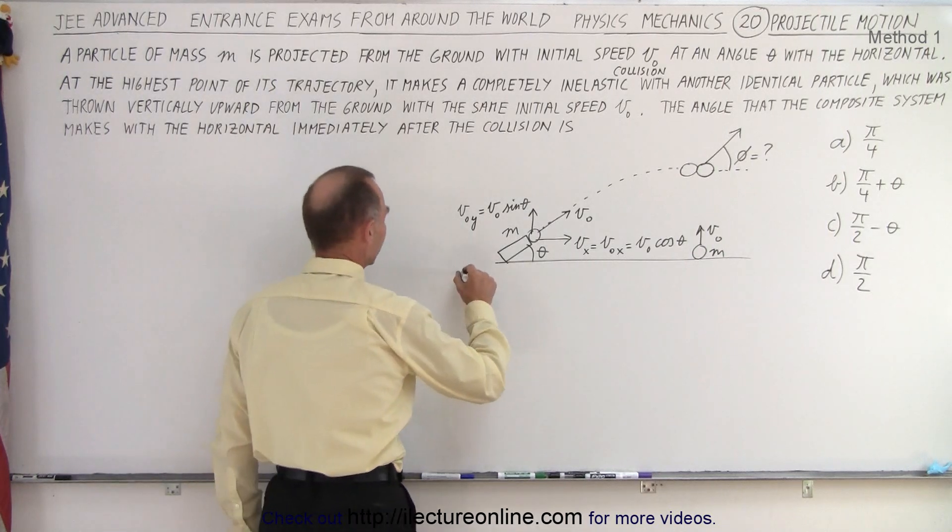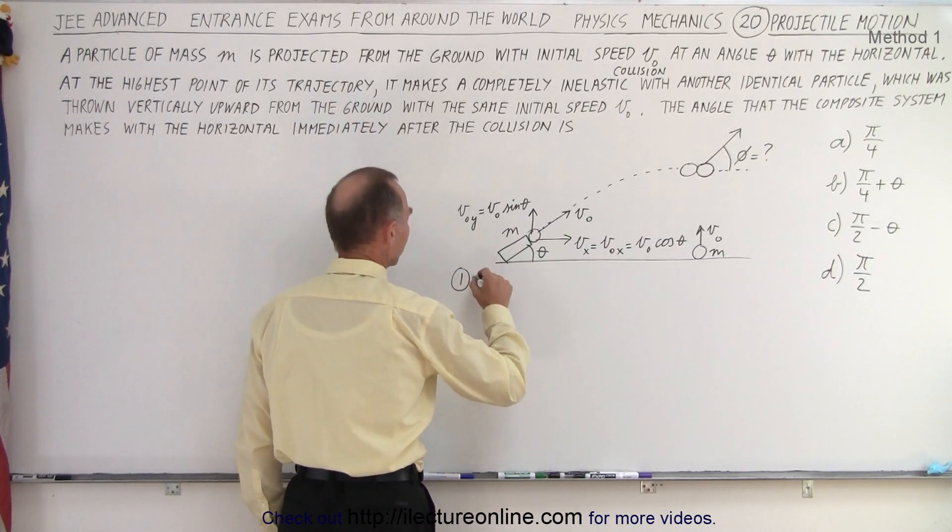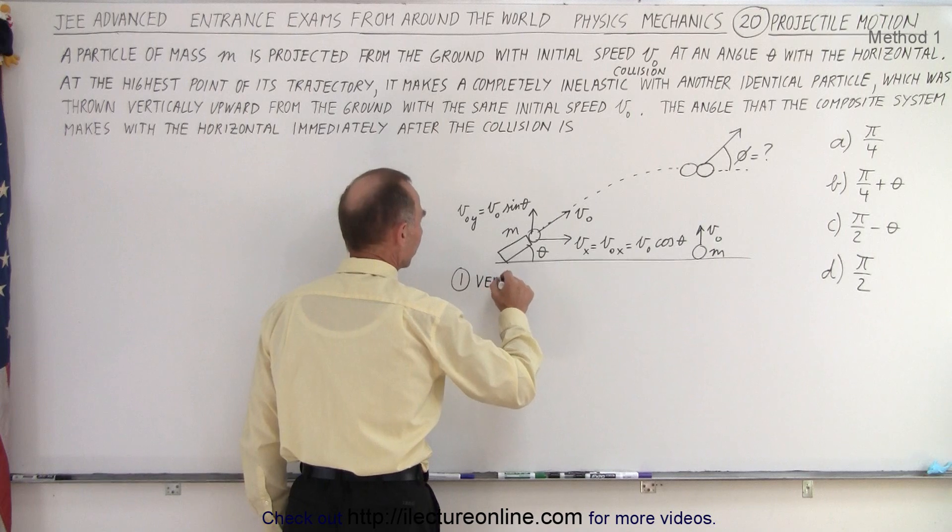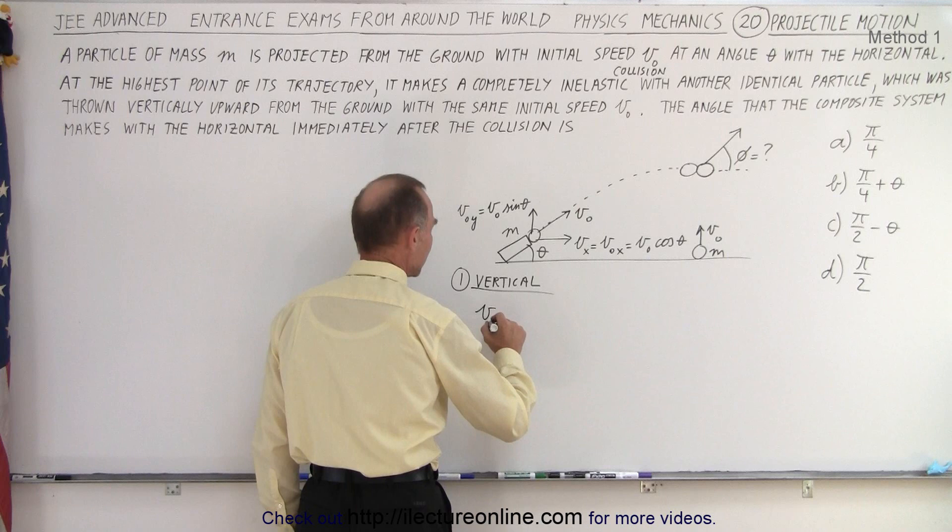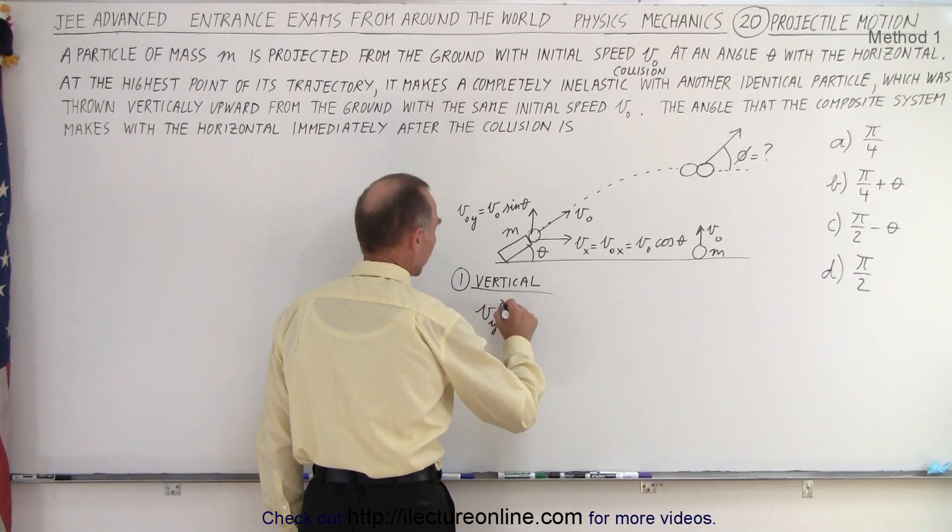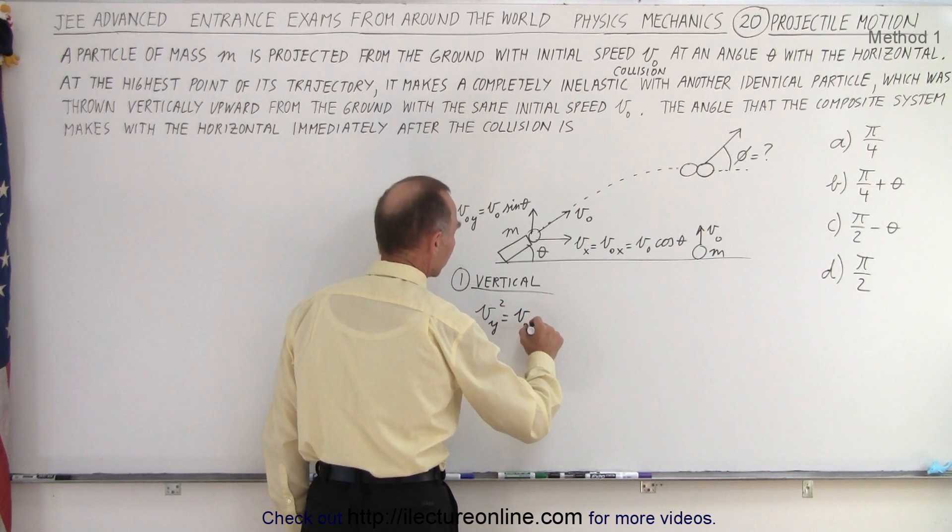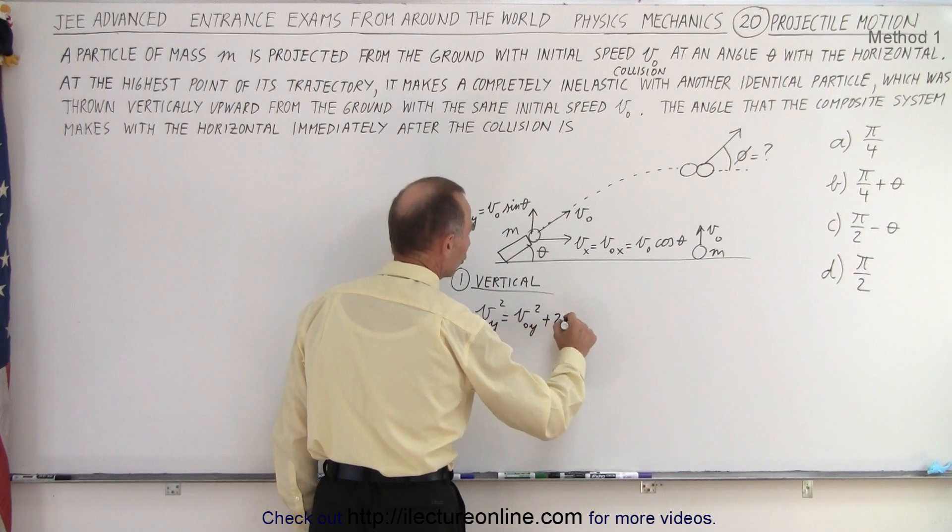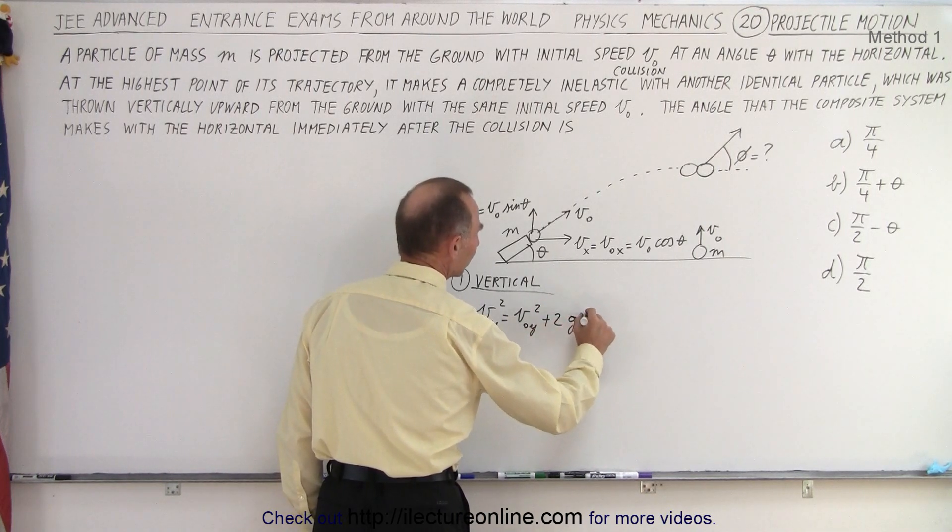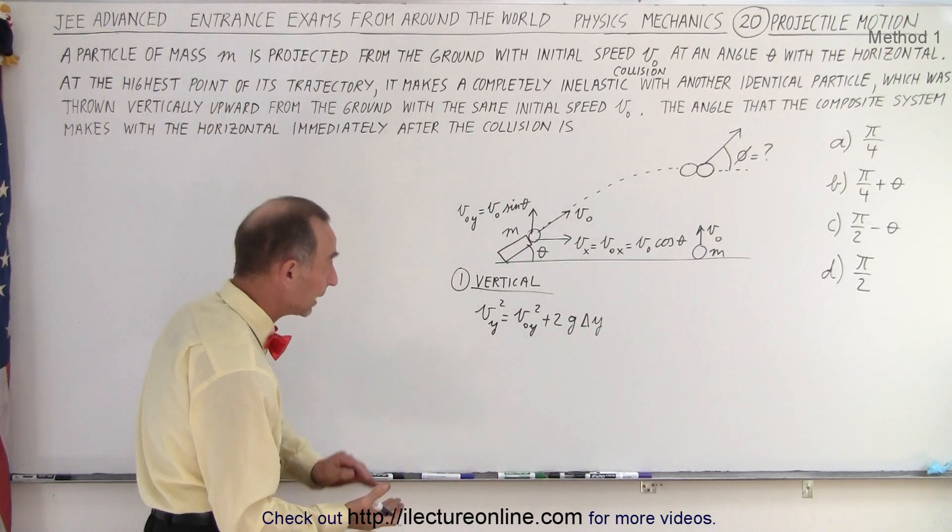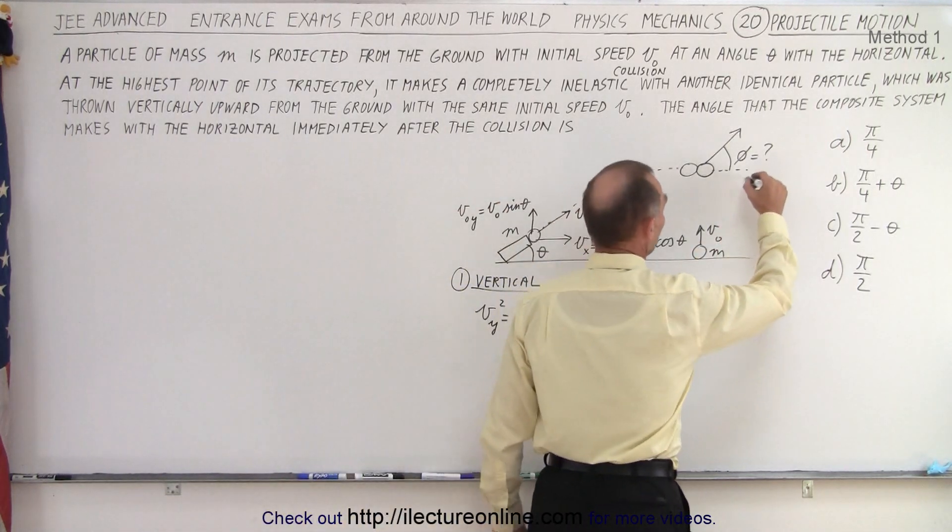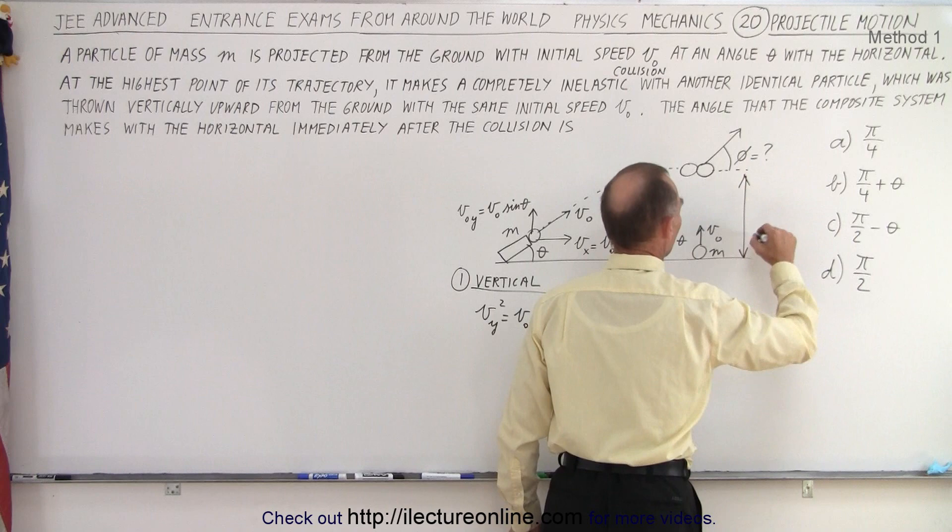Alright, so what I did was, okay, let's do the vertical motion first. And in vertical motion, we can use the equation that v in the y direction squared is equal to v initial in the y direction squared plus 2 times g times delta y. G being the acceleration due to gravity, delta y will be the height gained. So this here would be the height gained, which is our delta y.